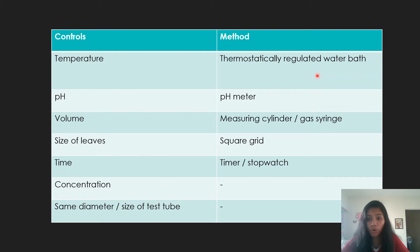So temperature, you can use a thermostatically regulated water bath. You must write the method of how you're going to control the variable. It is important. It is a must. Never forget that. You never know what will give you a mark. Sometimes this gives you a mark. Sometimes it doesn't. So always include it. Then you can control the pH by using a pH meter or a buffer solution.